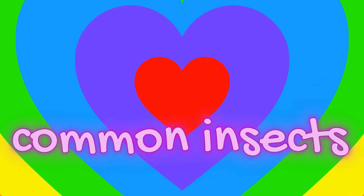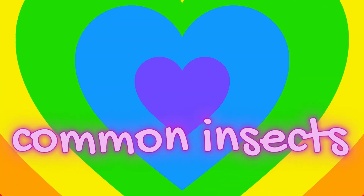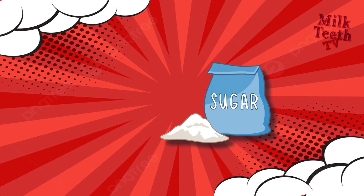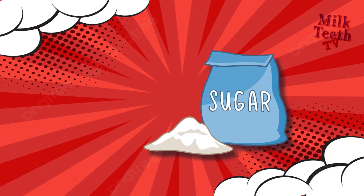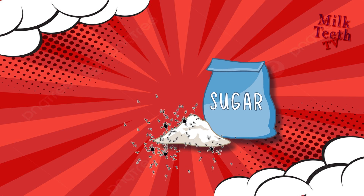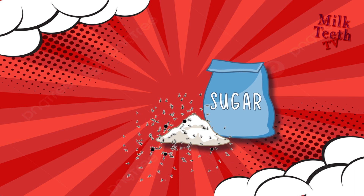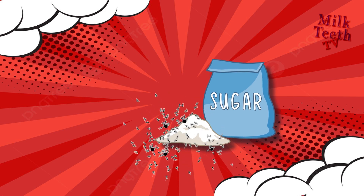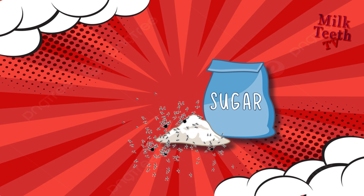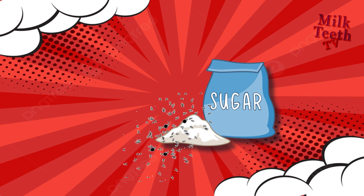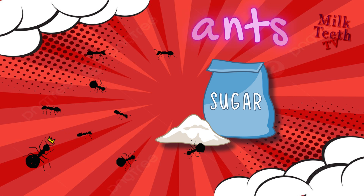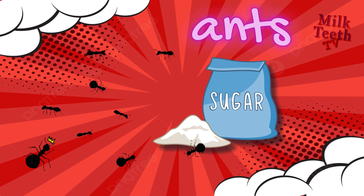Let's learn about common insects. Place a spoonful of sugar outside your house. After a few minutes, which animal would you probably see carry away the sugar? Yes, these must be tiny little ants. And ants are insects.